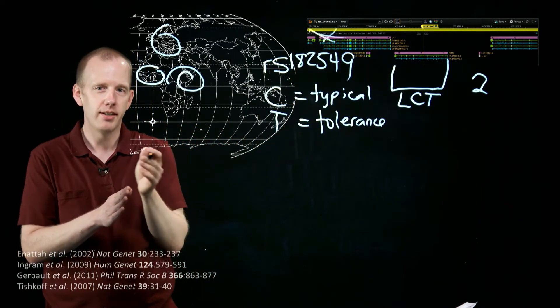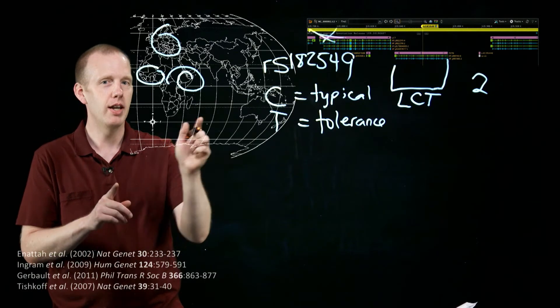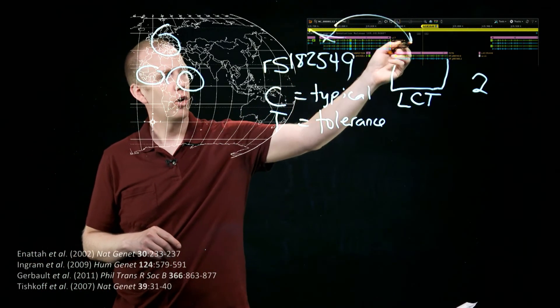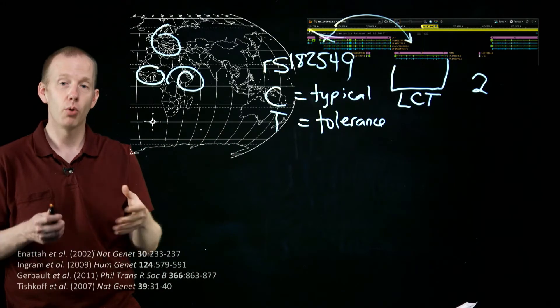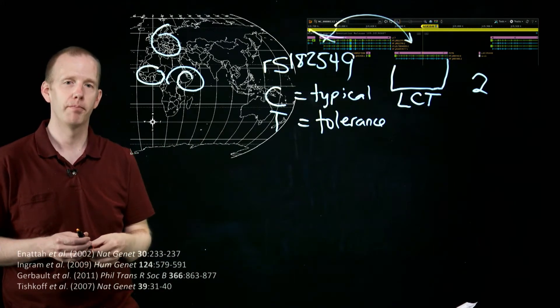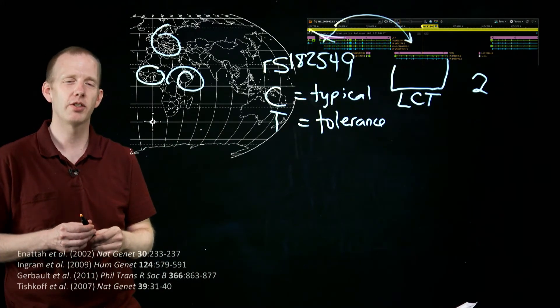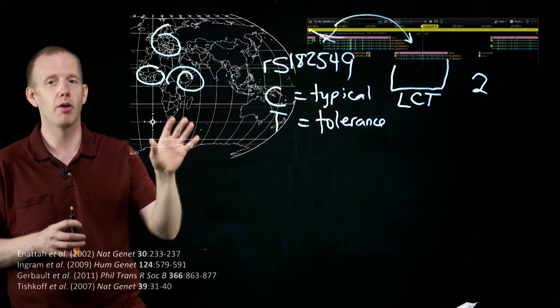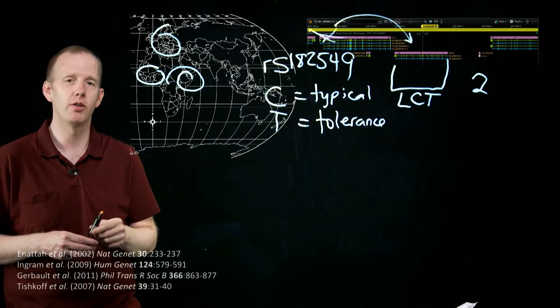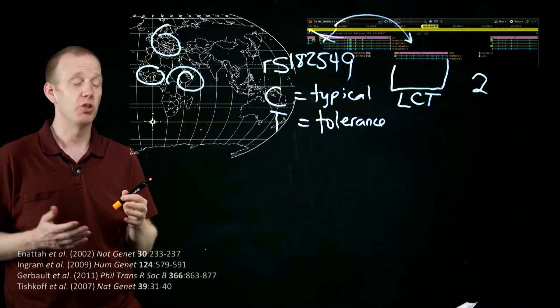And this mutation is inside this gene, but its effect is on whether or not that lactase protein gets produced into adulthood. So that's really interesting. And scientists understand the basics of why that is, and I won't explain it to you now, but maybe in a future video.